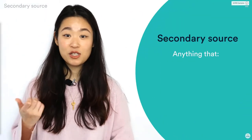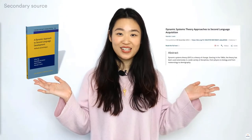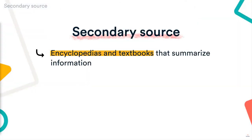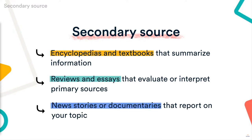But then, what is a secondary source? A secondary source is anything that describes, interprets, evaluates, or analyzes information from primary sources. In a paper or essay, most of your secondary sources will be academic books or journal articles. But they might also include encyclopedias and textbooks that summarize information, reviews and essays that evaluate or interpret primary sources, or news stories or documentaries that report on your topic. When you cite a secondary source, it's usually not to analyze it directly — instead, you'll probably test its arguments against new evidence or use its ideas to help formulate your own.